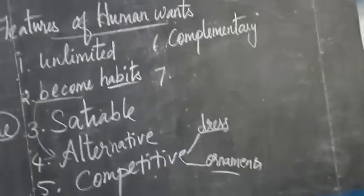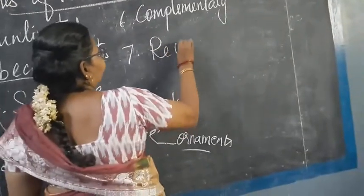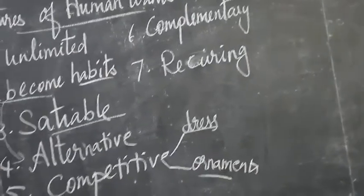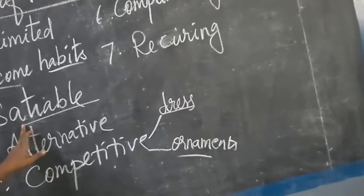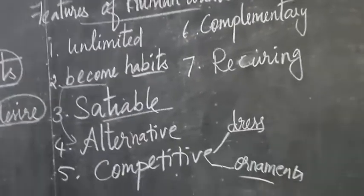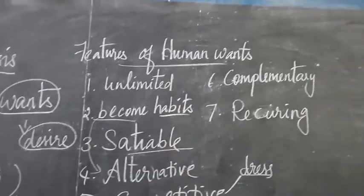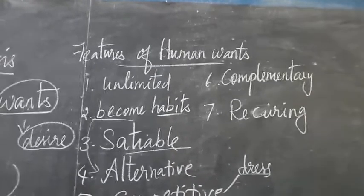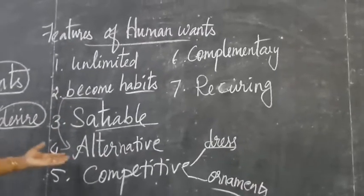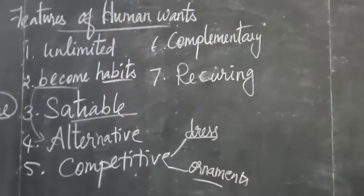Wants are recurring. What do you mean by recurring? Continuous. If you feel hungry and you need food, your hunger will be satisfied — but after three hours, what will happen? Again you will become hungry. It comes again and again. So wants are recurring. These are the characteristics of wants. We have seven characteristics: wants are unlimited, wants become habits, wants are satiable, wants are alternative, wants are competitive, wants are complementary, and wants are recurring. These are the characteristics of human wants.